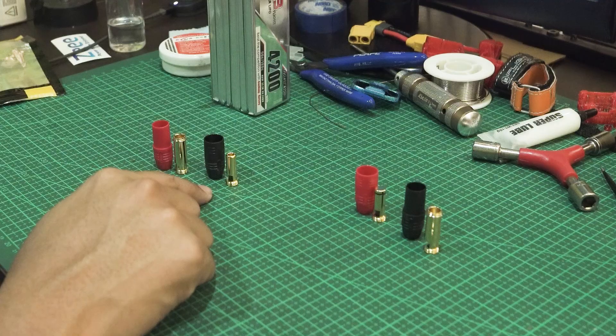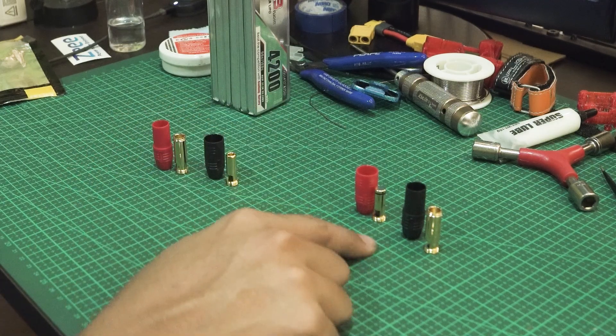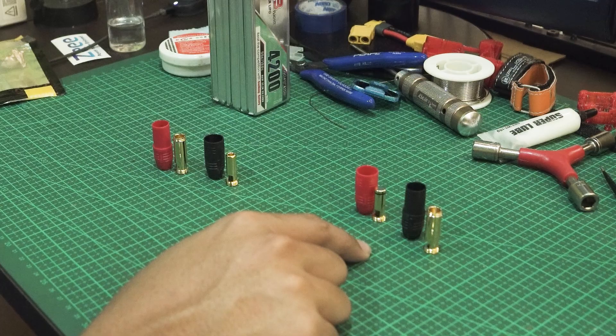Hence, this will be the leads I'll be soldering onto my ESC, while this will be the leads I'll be soldering onto the rest of my batteries.